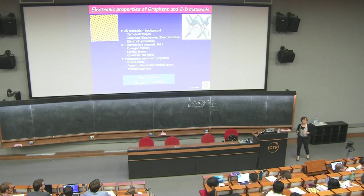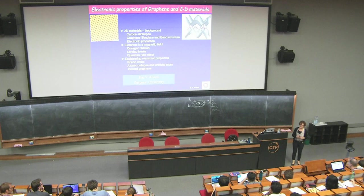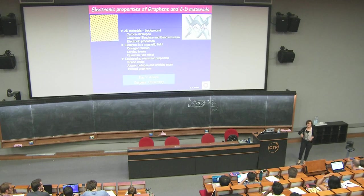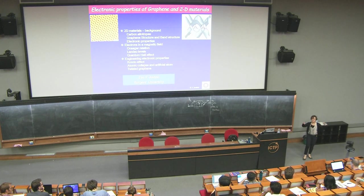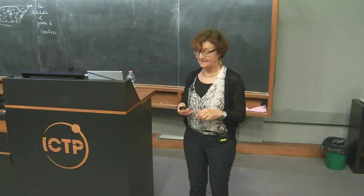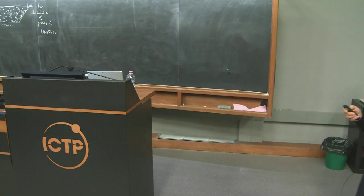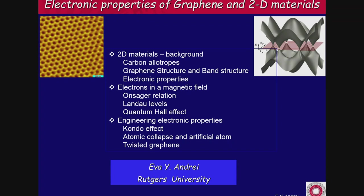This is absolutely unheard of — just by twisting, you can induce superconductivity. The phase diagram of the superconductor and the Mott insulator next to it resembles in many ways the phase diagram of high-Tc materials: you have an insulating piece and on the two sides you have superconducting domes. This is something that everybody is getting excited about, and I'm planning to tell you about this tomorrow.